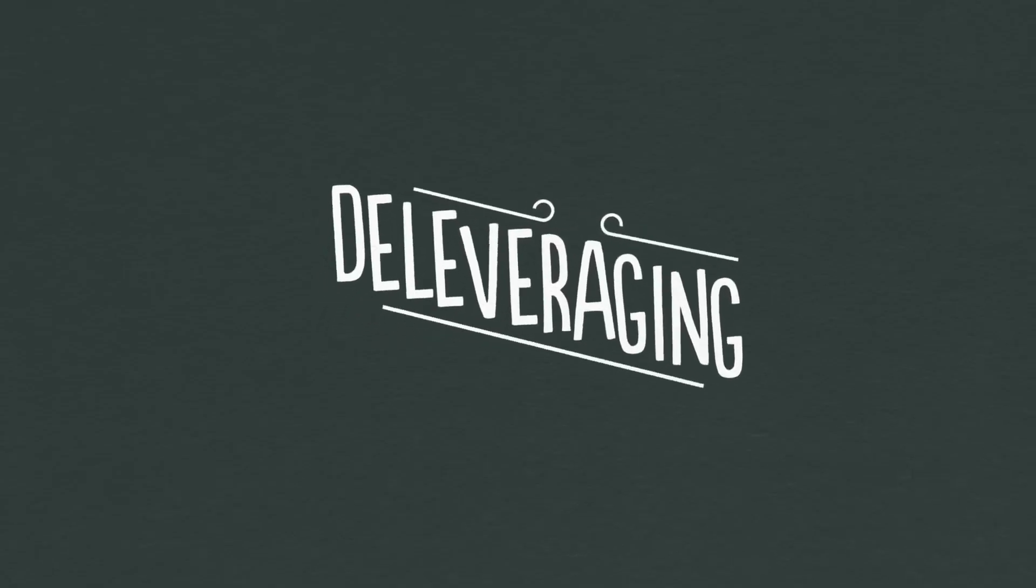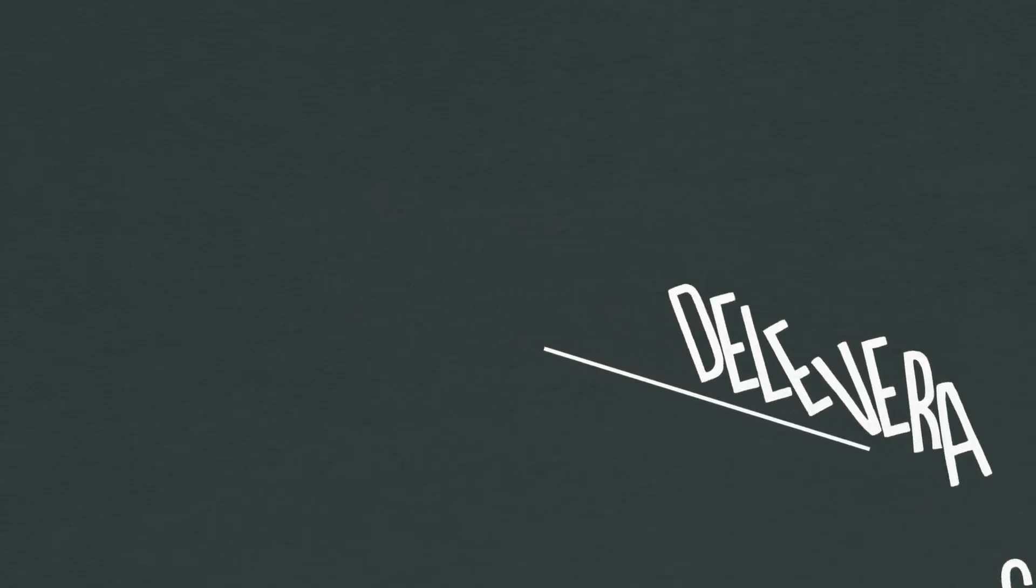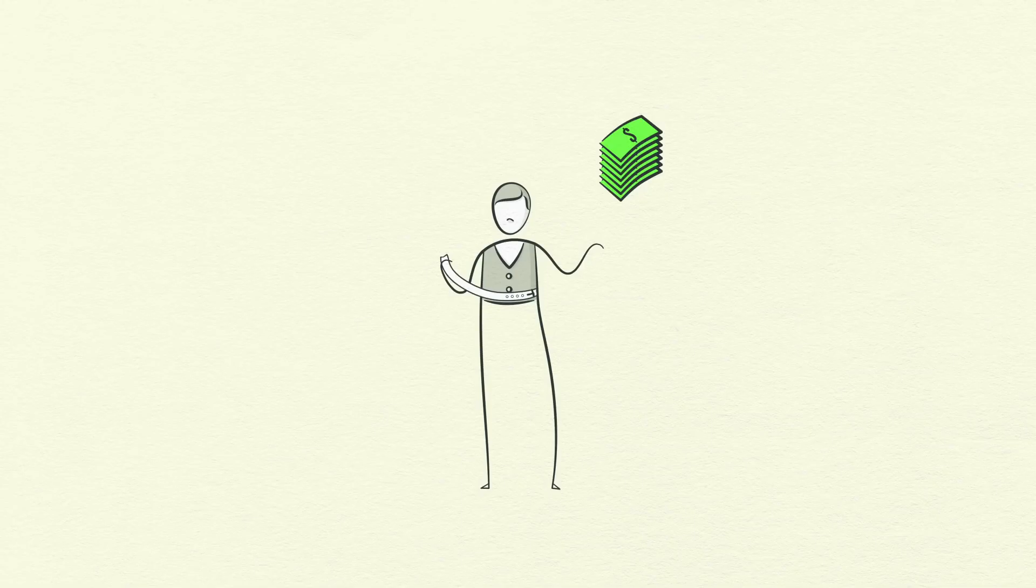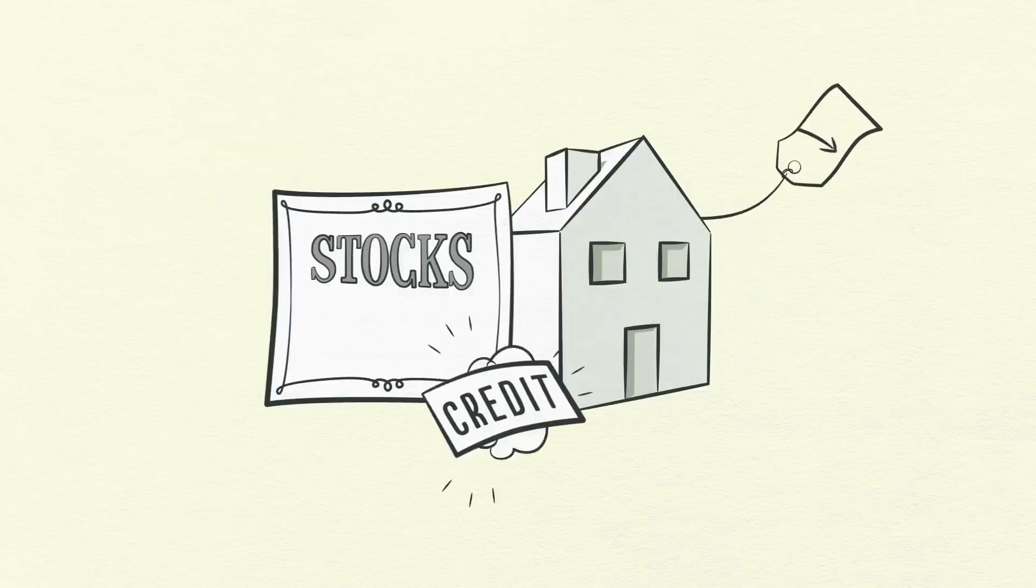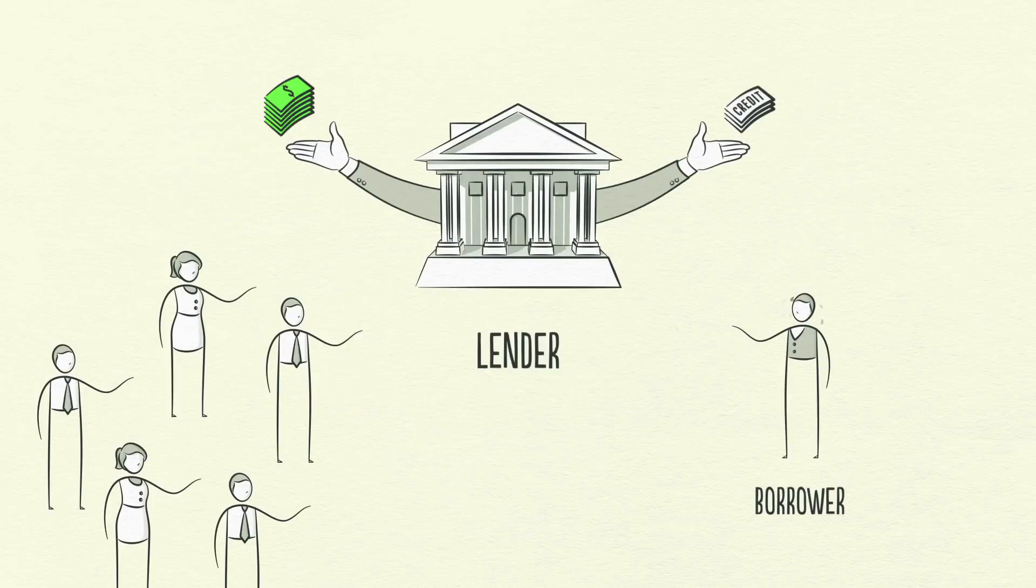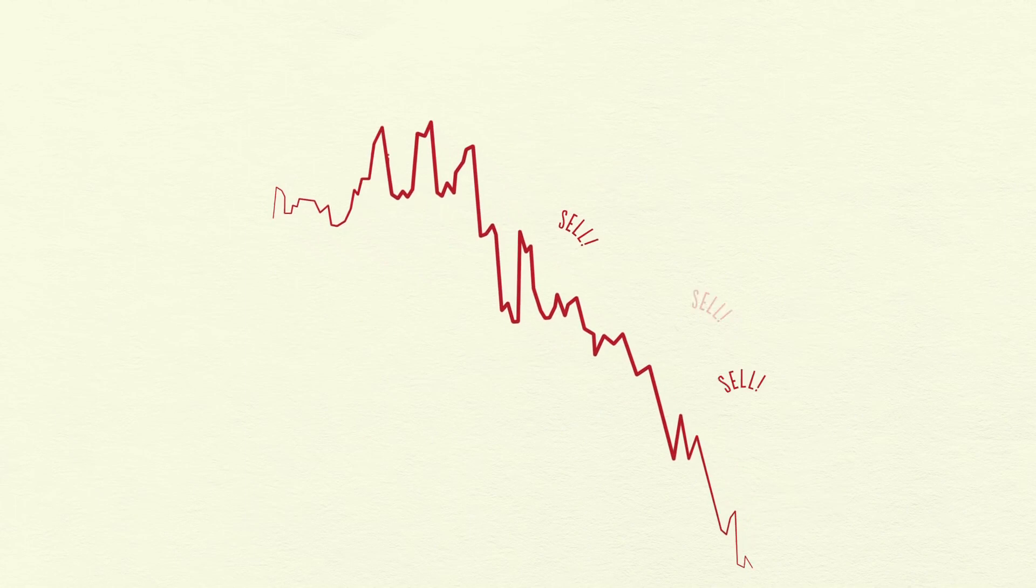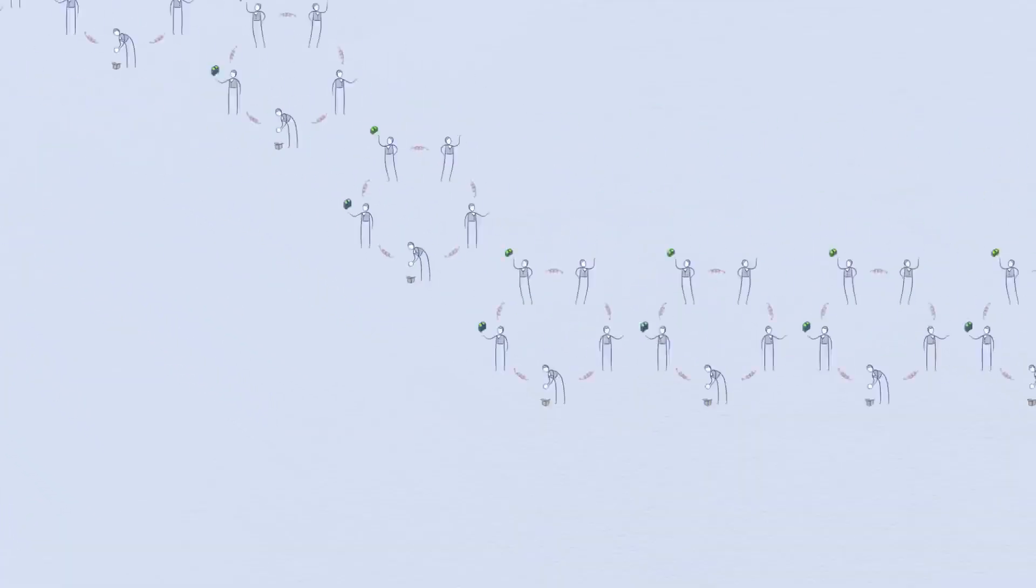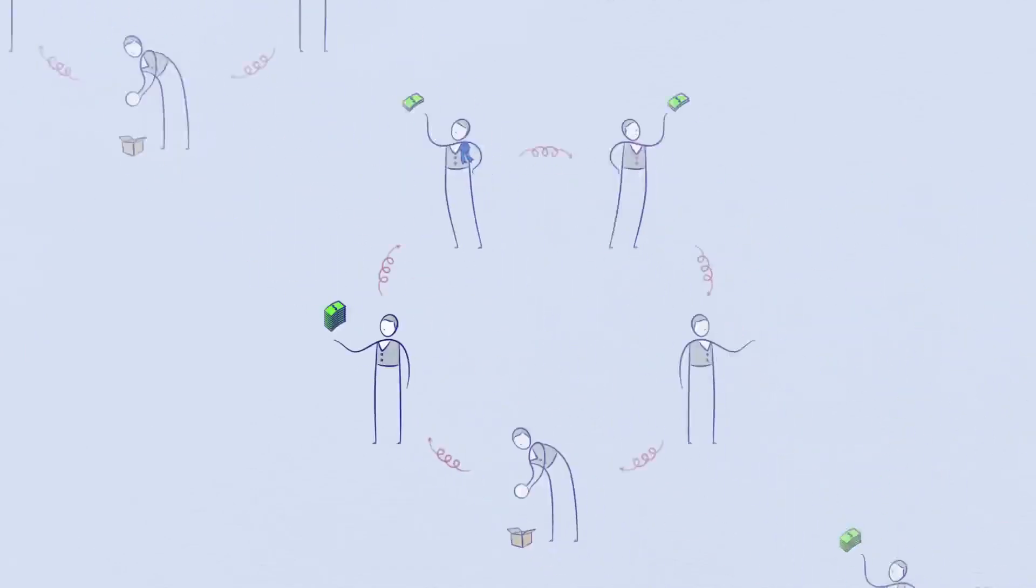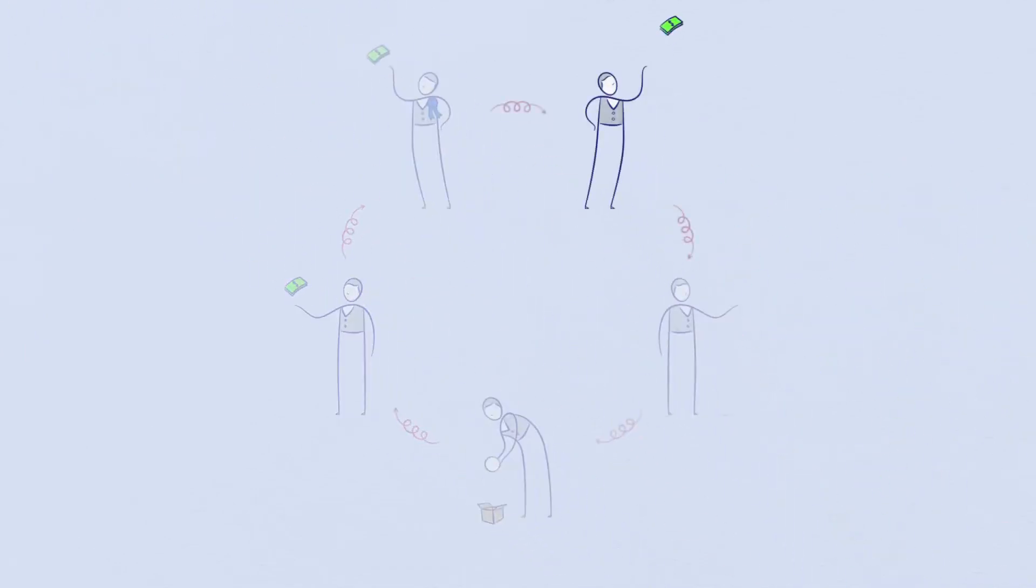Now the economy begins deleveraging. In a deleveraging, people cut spending, incomes fall, credit disappears, asset prices drop, banks get squeezed, the stock market crashes, social tensions rise, and the whole thing starts to feed on itself the other way. As incomes fall and debt repayments rise, borrowers get squeezed. No longer creditworthy, credit dries up, and borrowers can no longer borrow enough money to make their debt repayments.